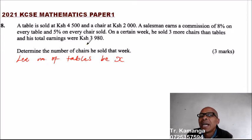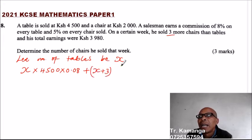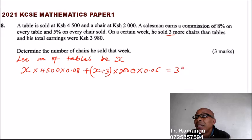Because that week he earned 3,980, it means that on the number of tables X, he sold three more chairs. So you take X multiplied by the cost of one table, 4,500 Kenyan shillings, and he was getting 0.08, that is the same as 8%. Then you add number of chairs. He sold three more chairs than tables, so it means X plus 3, and you multiply by 2,000 and he was getting 5%, so that is 0.05, or 5 of 100, which will still give you the same. He earned after selling this 3,980.